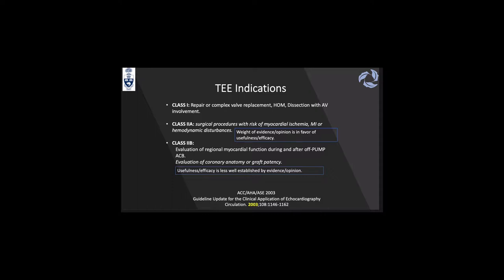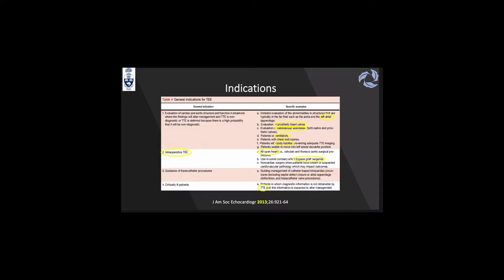Those two indications are related to standard on-pump CABG or even lung transplantation — Class 2B for checking graft patency or anastomosis on the pulmonary veins. That's when the risks and benefits need to be weighed to make a formal decision on whether TEE can or can't be done. In 2013, the American Society of Echo updated this: intraoperative TEE is required for all open heart valvular replacement, valvular repair, or thoracic aortic surgical procedures including the ascending aorta and thoraco-abdominal repairs, and is recommended in some coronary artery bypass graft surgeries.